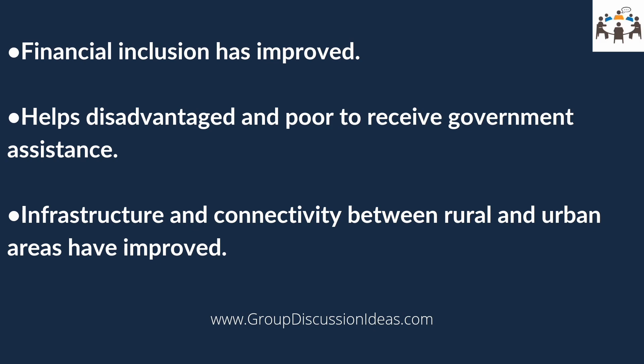The expansion of financial inclusion has also made it possible for the disadvantaged and poor to receive government assistance and benefits straight into their bank accounts through the Direct Benefit Transfer Programme, protecting them from fraud, corruption, and delay in the delivery of payments. Infrastructure and connectivity between rural and urban areas have also improved, making it easier for people to avail facilities like healthcare and education and creating new livelihood opportunities.